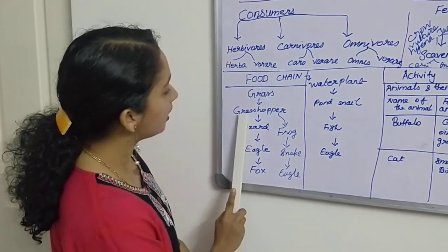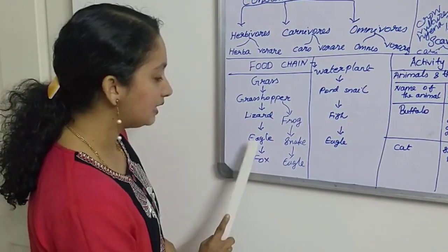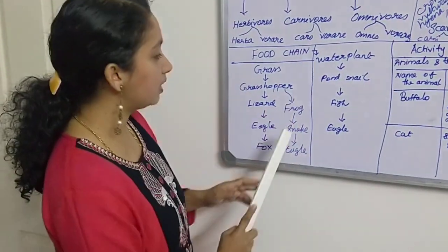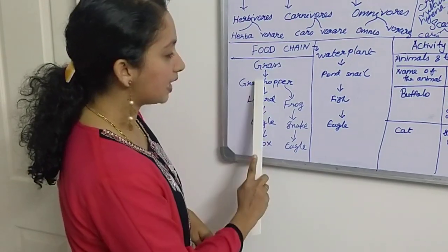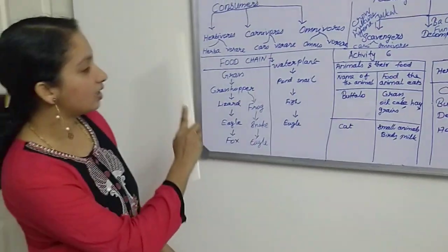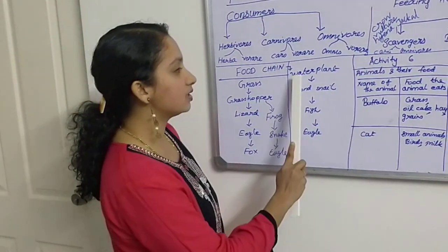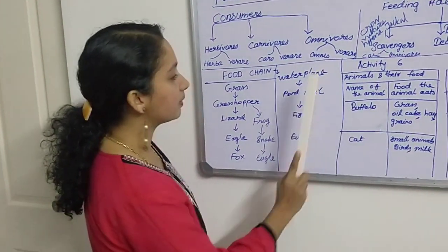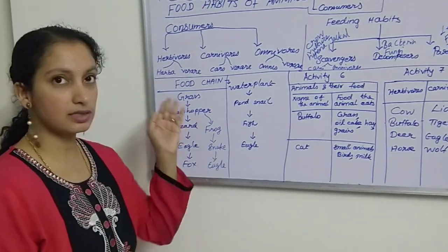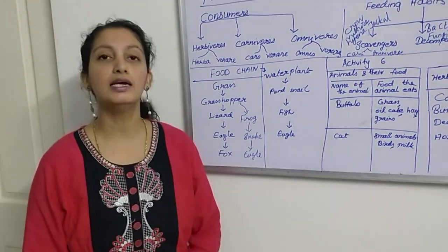For example: grass is eaten by grasshopper, grasshopper is taken by lizard, lizard is taken by eagle, and eagle is consumed by fox. In another version: grass is taken by grasshopper, grasshopper by frog, frog by snake, and snake by eagle. A third example involves water: water plant is taken by pond snail, pond snail is eaten by fish, and fish is consumed by eagle. So these are three examples of food chains.